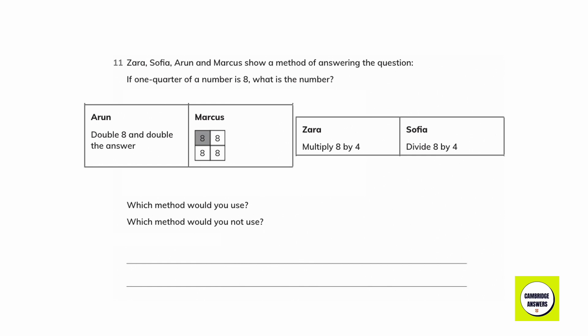Zara, Sophia, Arun and Marcus show a method of answering the question. If 1 quarter of a number is 8, what is the number? Which method would you use? Which method would you not use?